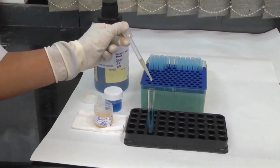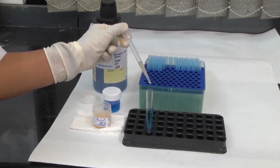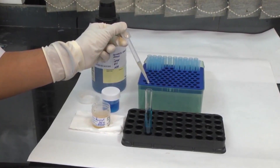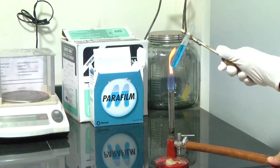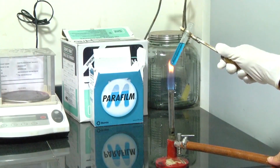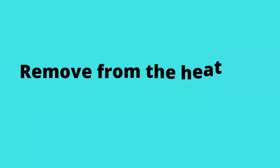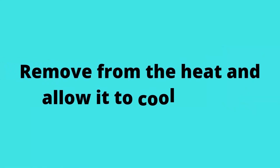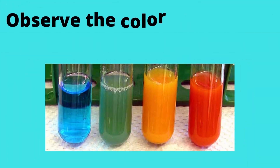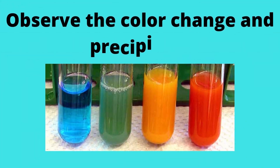Add 8 drops of urine into the tube, mix, and heat for 5 minutes. Remove from heat and allow it to cool slowly. Observe the color change and precipitate.